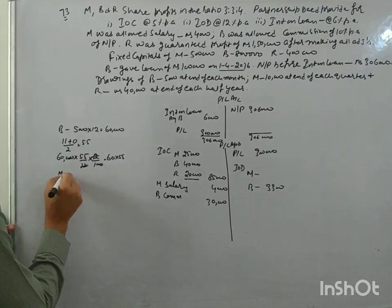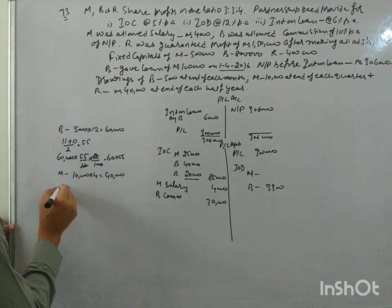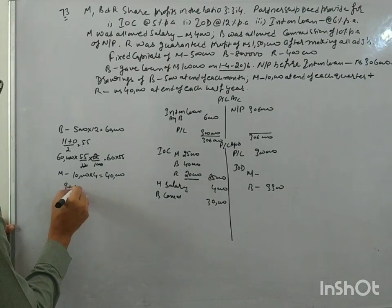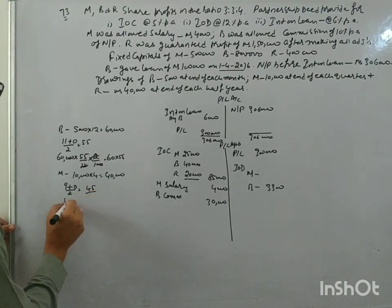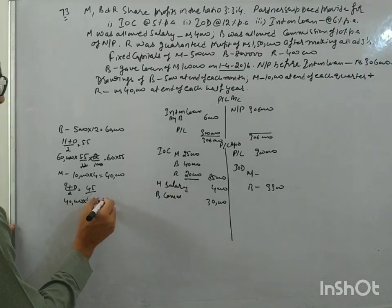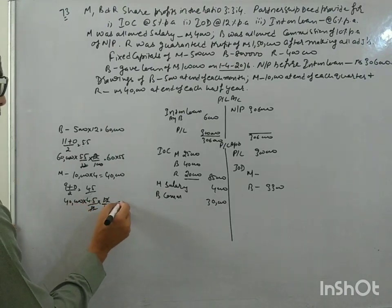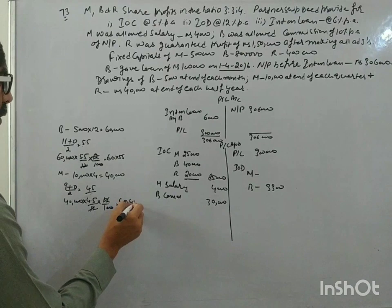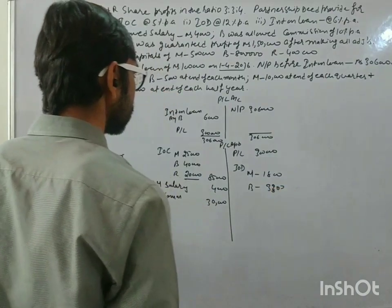Now M, 10,000 for each quarter. So total drawing is 40,000. Time left after first drawing is 9 months divided by 2, so 4.5 months. So interest on drawing, 40,000 into 4.5 divided by 12 into rate 5%. So 40,000 into 4.5, that is 1,500.